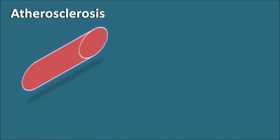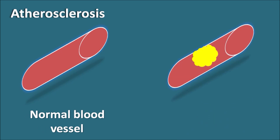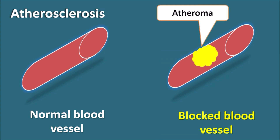First of all, let us see what is atherosclerosis. So suppose this is a normal blood vessel and this is a blocked blood vessel. This blood vessel is going to be blocked by formation of atheroma, a fibrous cap which is formed within the blood vessel. Because of this atheroma, the blood supply is going to be blocked, and this atheroma is caused by increased LDL levels in the serum. This process is what we call atherosclerosis — narrowing of the blood vessel because of the formation of atheroma.